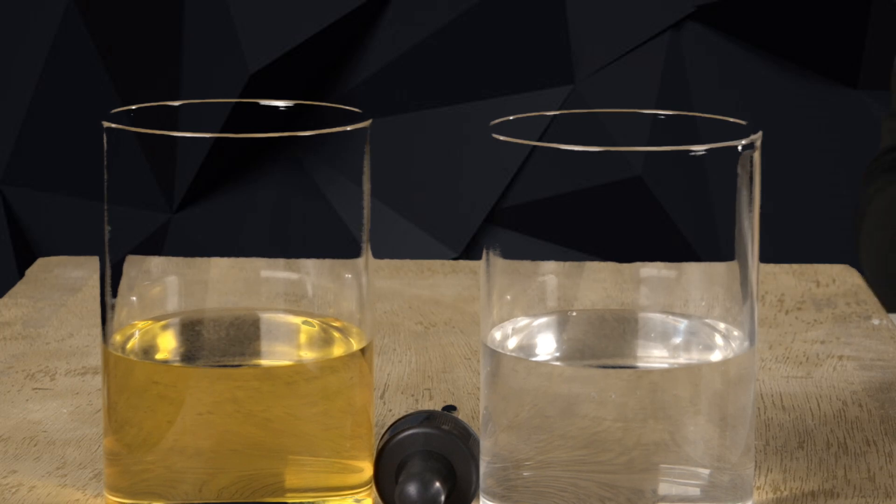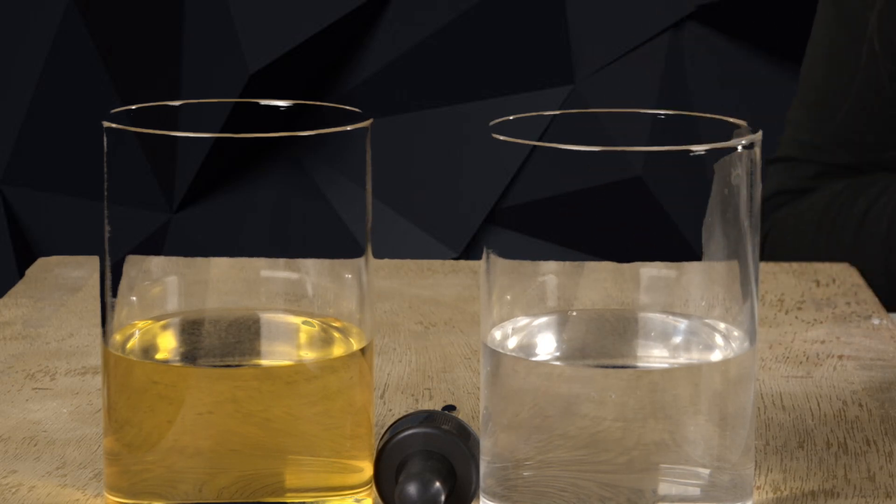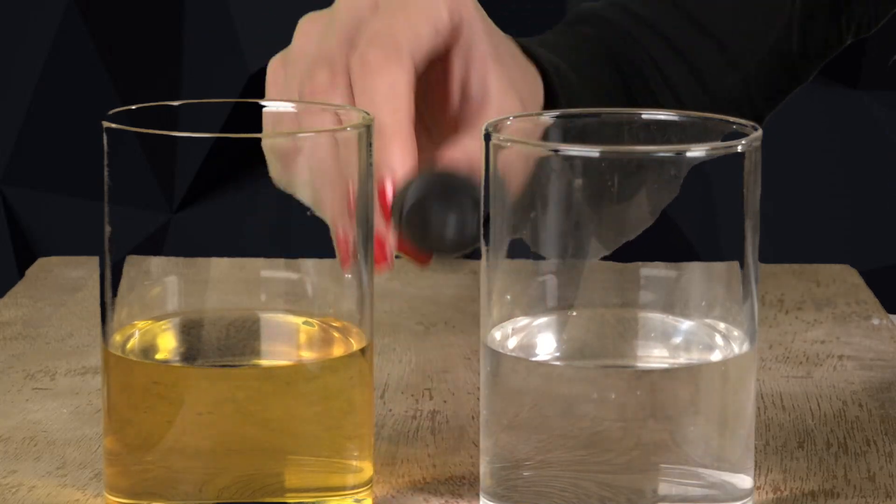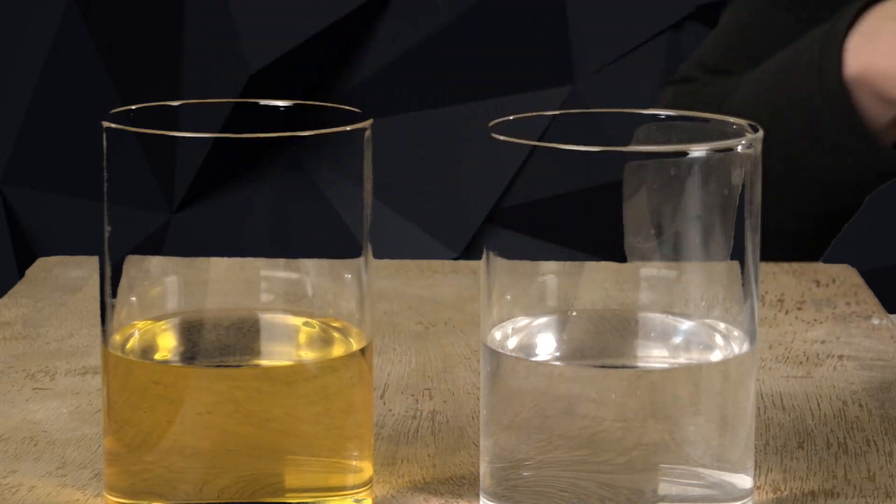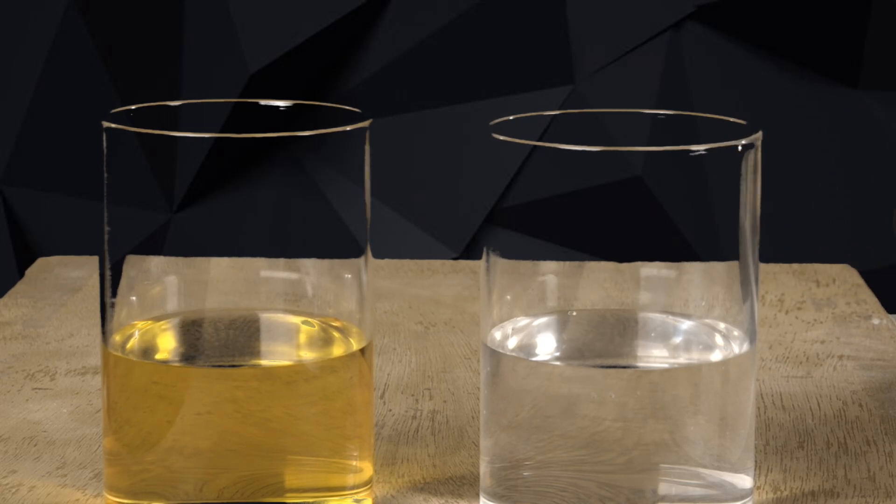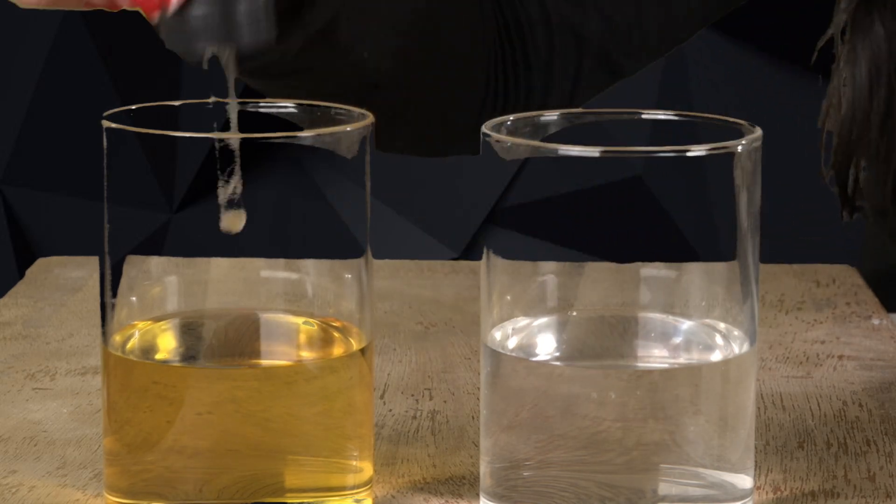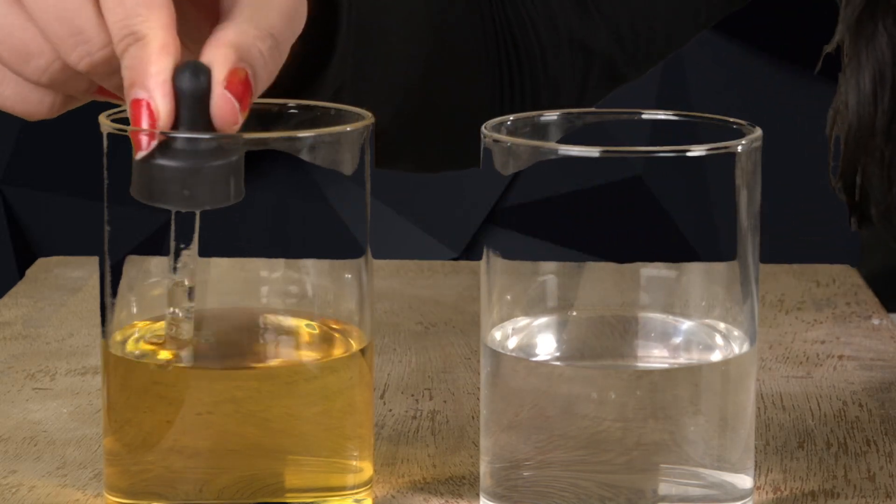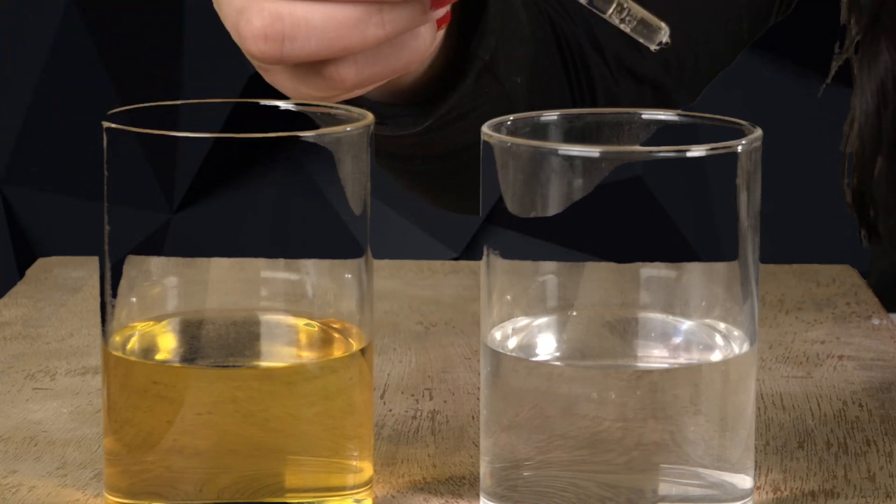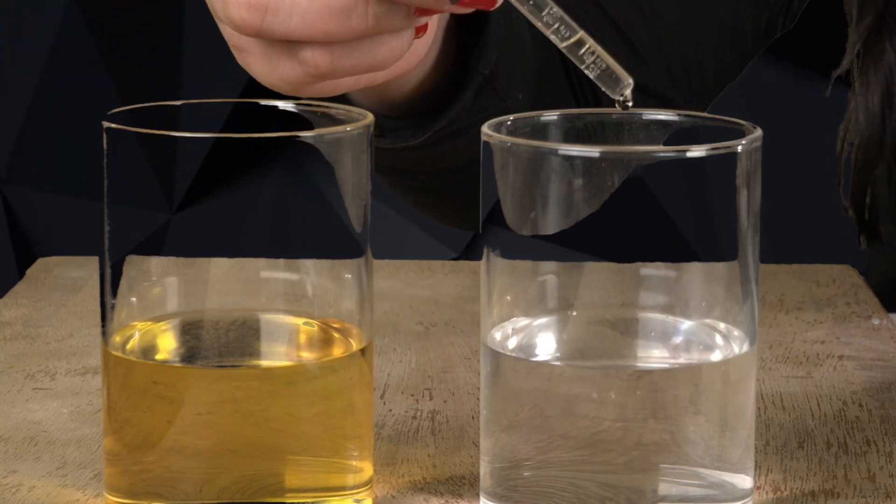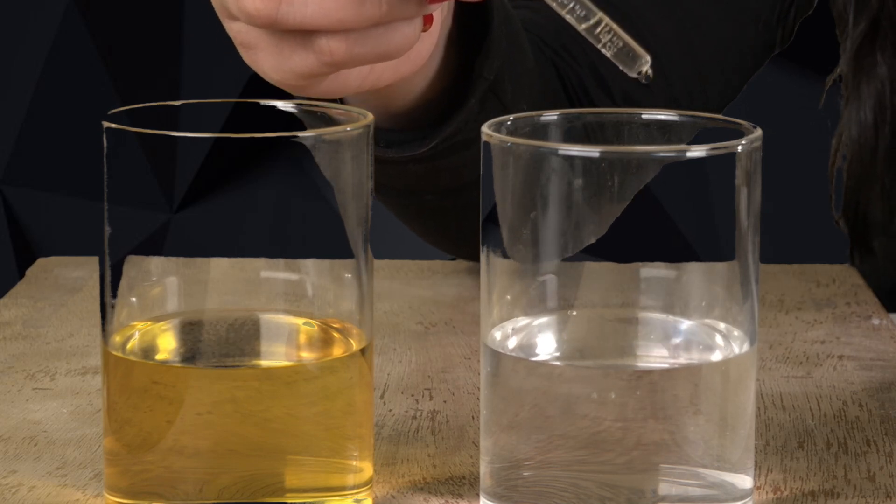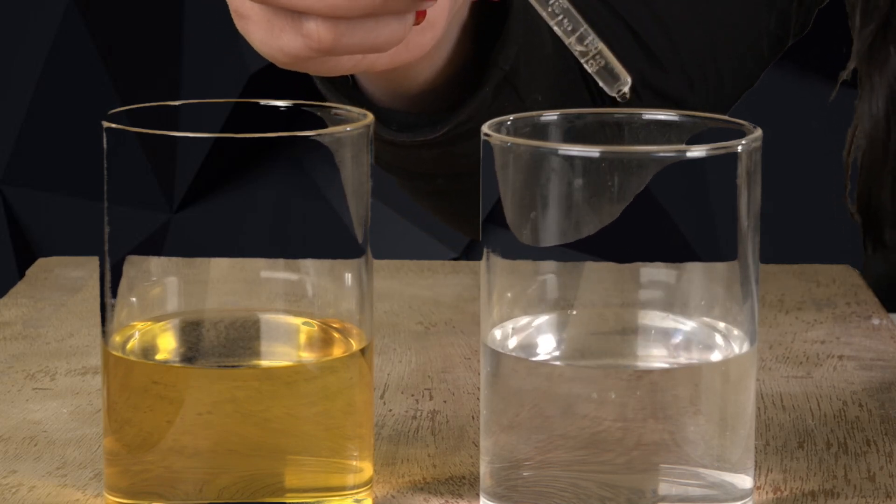When we talk about concentration of an acid, it basically refers to the amount of H+ ions present per unit volume of an aqueous solution of acids. Now here we have two glasses - in the first glass we have acid, in the second one we have water. Let's dilute it by adding acid to water drop by drop.